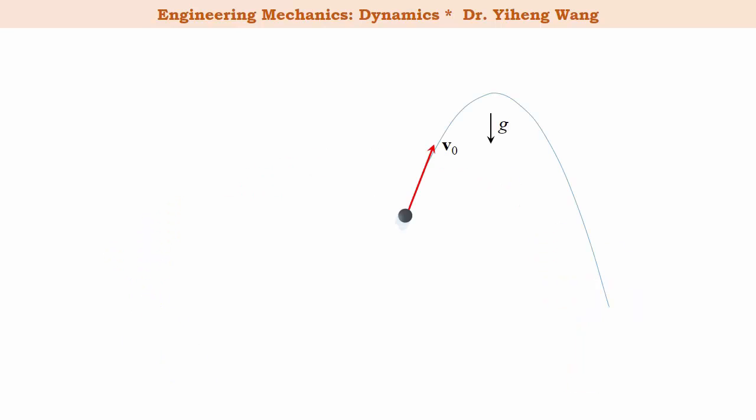Here, this object is given an initial velocity and the path of the projectile motion is shown. Let's put this path in a 2D rectangular coordinate system. For convenience, the x-axis is always chosen as parallel to the horizon, and the origin can be chosen arbitrarily.